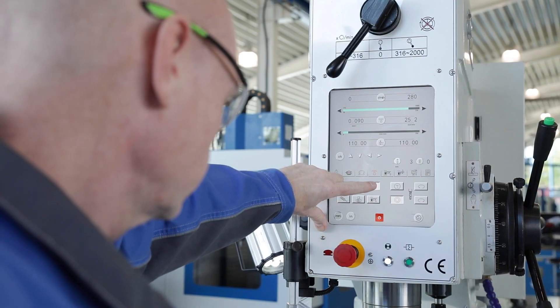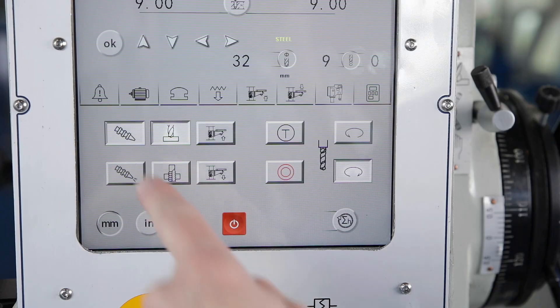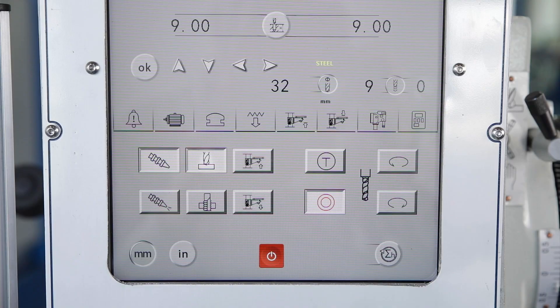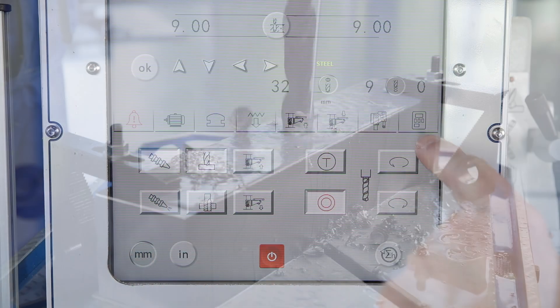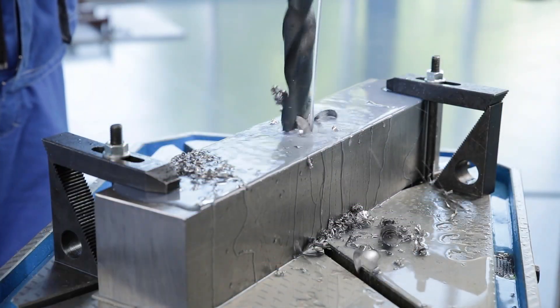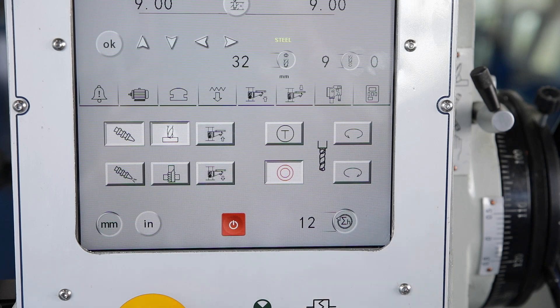In addition, the stroke of the table and the coolant device may be activated on the touchscreen. Function and alarm messages are clearly displayed and inform the operator about the operating status. The operating hours counter completes the function.